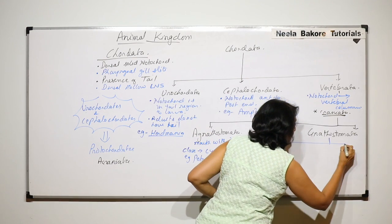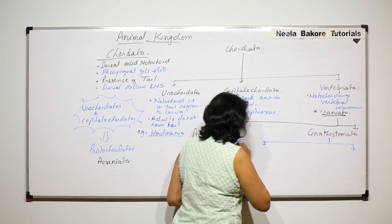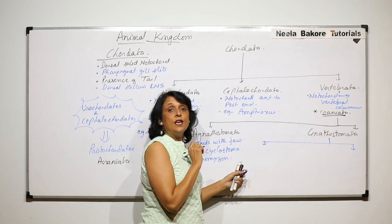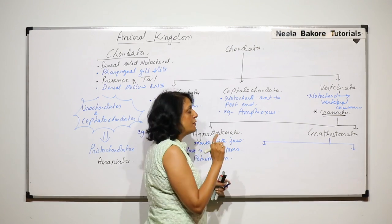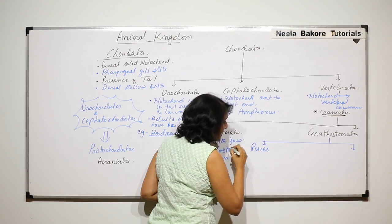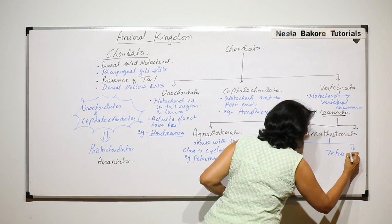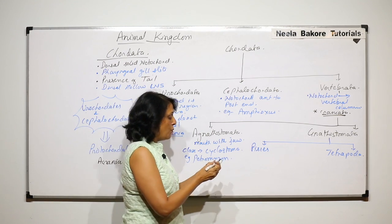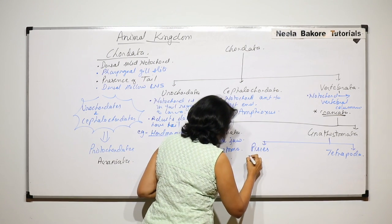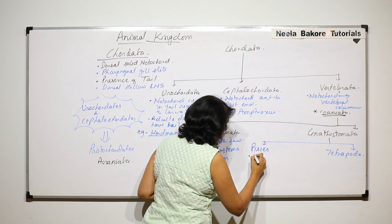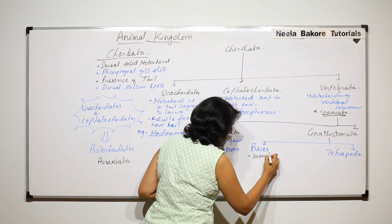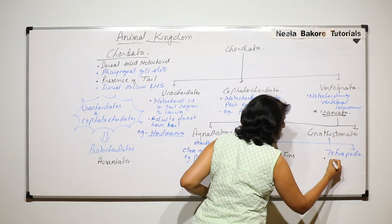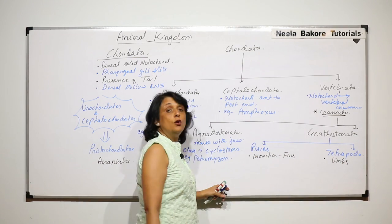These animals they have mouth with proper jaw. This is now divided into two categories, and this division is based on the locomotive structure, into Pisces and Tetrapoda. The locomotive structure is fin, so locomotion is by fins. Whereas in Tetrapoda, there are limbs for locomotion.